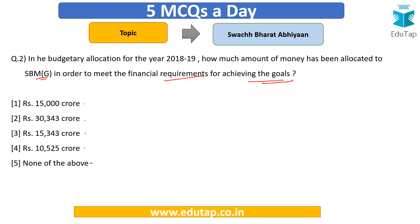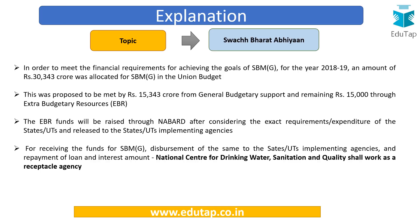The answer is option two. To meet the financial requirements for achieving the goals of Swachh Bharat Mission Grameen — the open defecation-free India goal is particularly relevant for rural areas — the Budget 2018-19 allocated ₹30,344 crore. This breaks down into ₹15,343 crore from the general budgetary support, and the remaining ₹15,000 crore through extra budgetary resources.